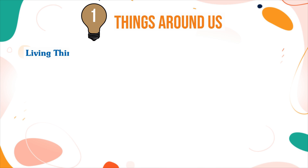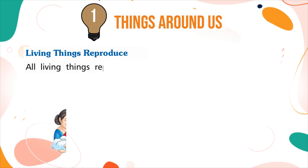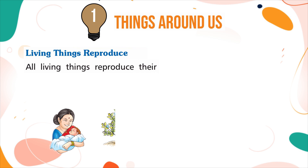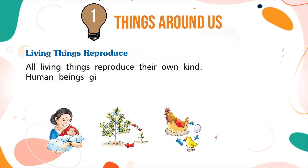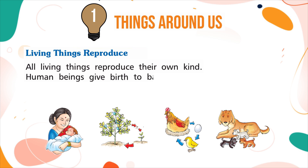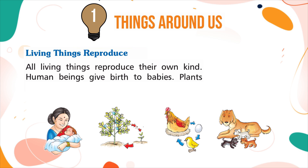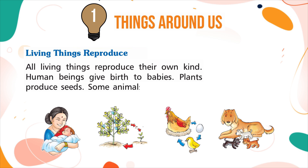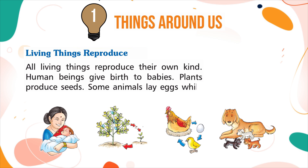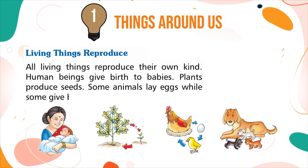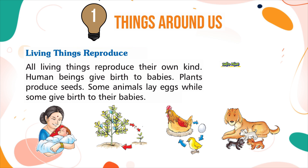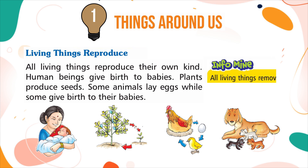Living things reproduce. All living things reproduce their own kind. Human beings give birth to babies. Plants produce seeds. Some animals lay eggs while some give birth to their babies. All living things also remove waste from their body.